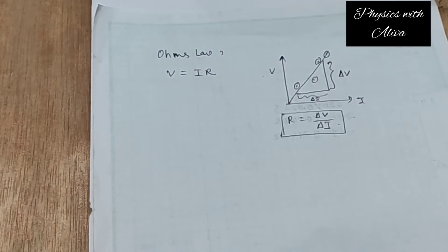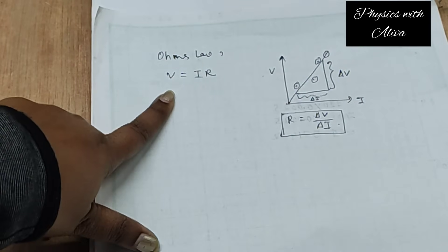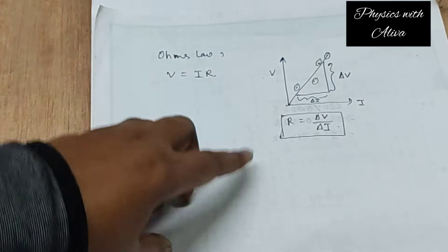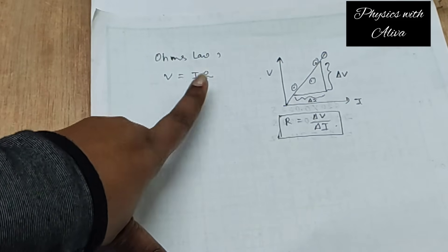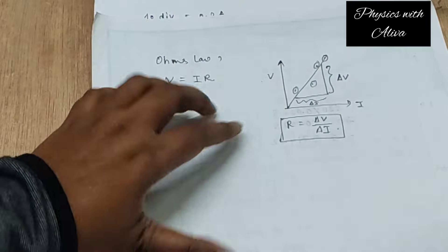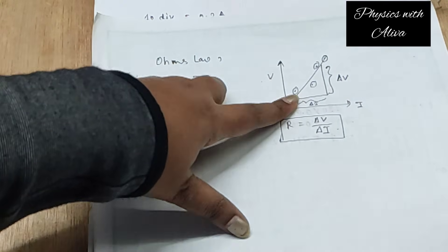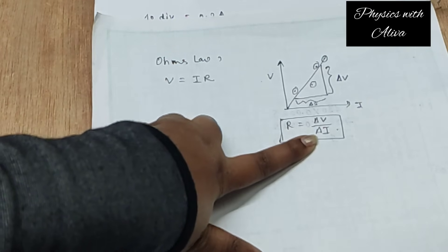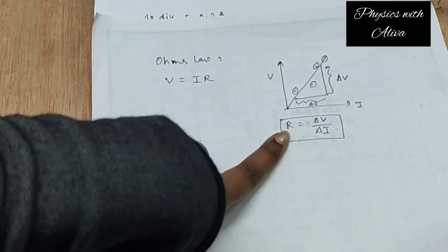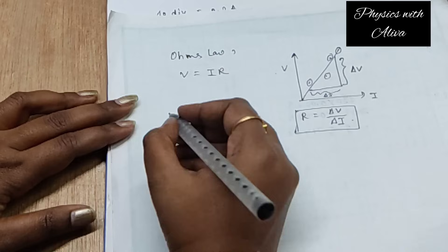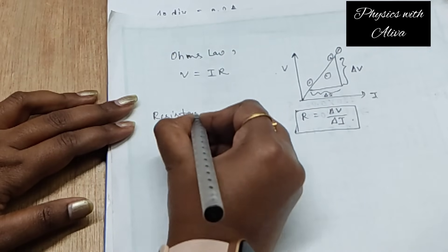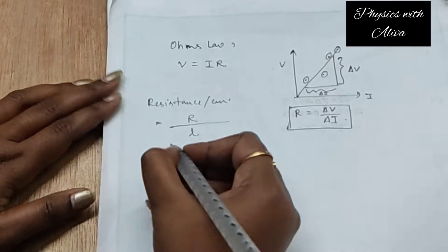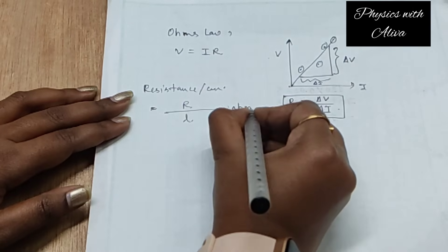In this practical we are actually verifying Ohm's law. The mathematical statement of Ohm's law is V = IR, where V is the potential difference, I is the current, and R is the resistance. We are taking readings of different voltages and corresponding currents, then plotting them to get a straight line passing through the origin, and then calculating the slope. By dividing ΔV by ΔI we get the slope, and the slope equals the resistance. We then divide the resistance by the length of the wire to get the unit as ohm per centimeter.